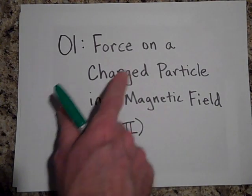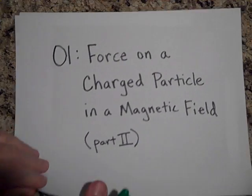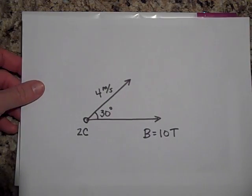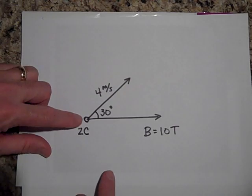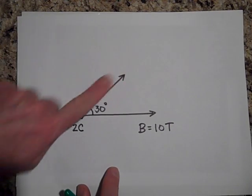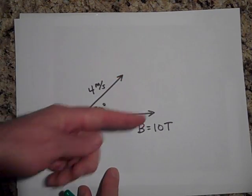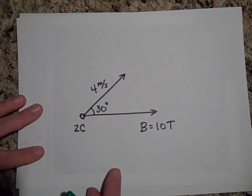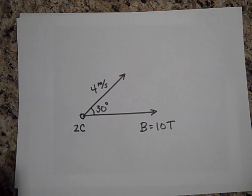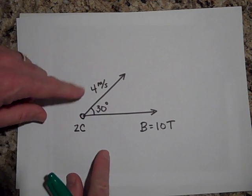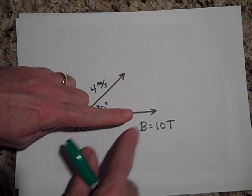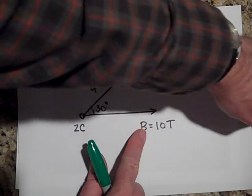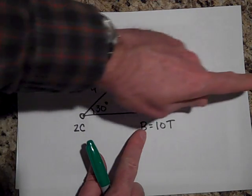This is part two of the force on a charged particle in a magnetic field. We have a positive charge of two coulombs heading this way at four meters per second, and the field is that way. You only want to take the part of v that's perpendicular to b — that's the only part that's going to cause a force. If the charge were moving in the same direction as the field, it would just keep heading that way at four meters per second.